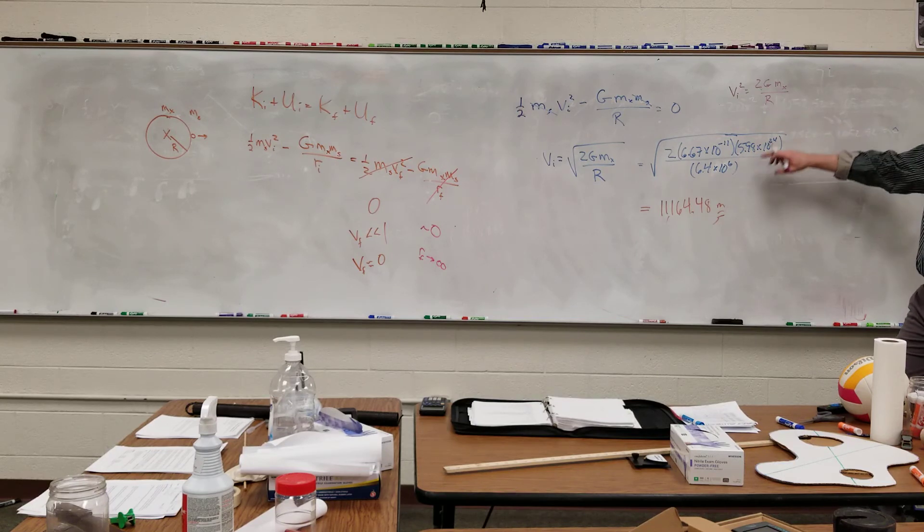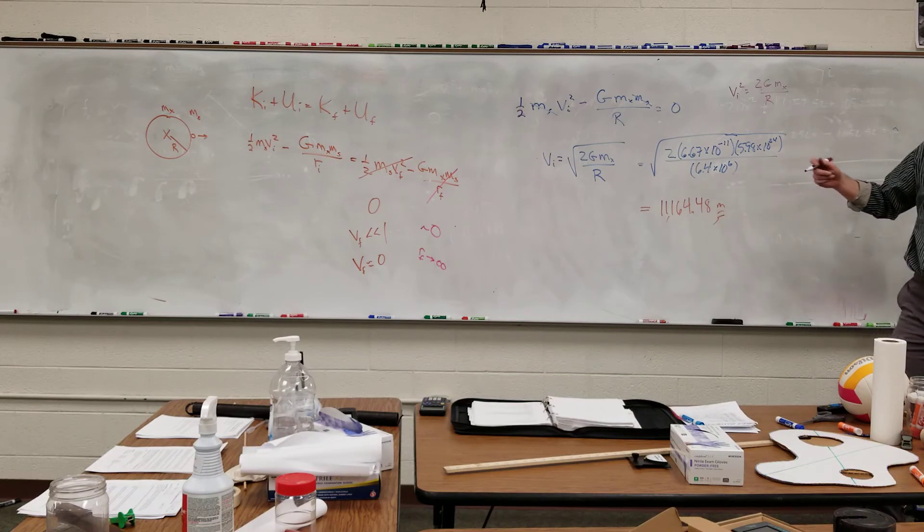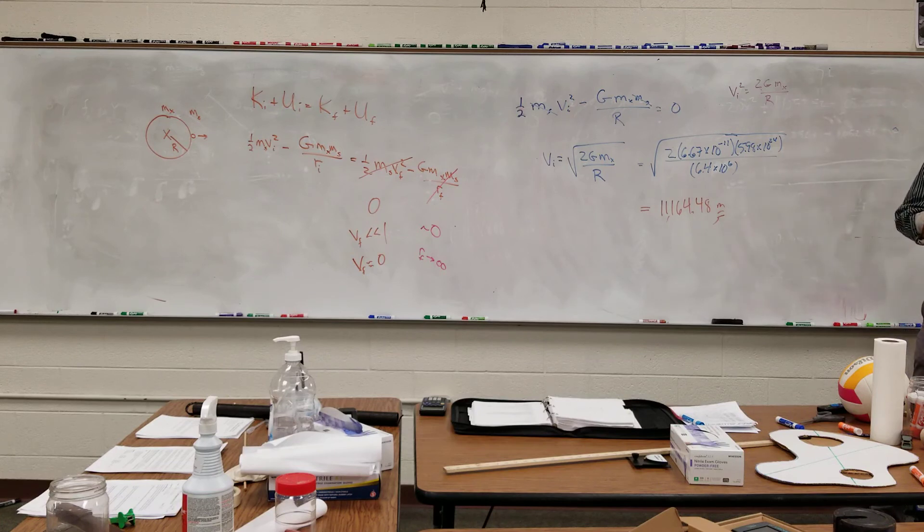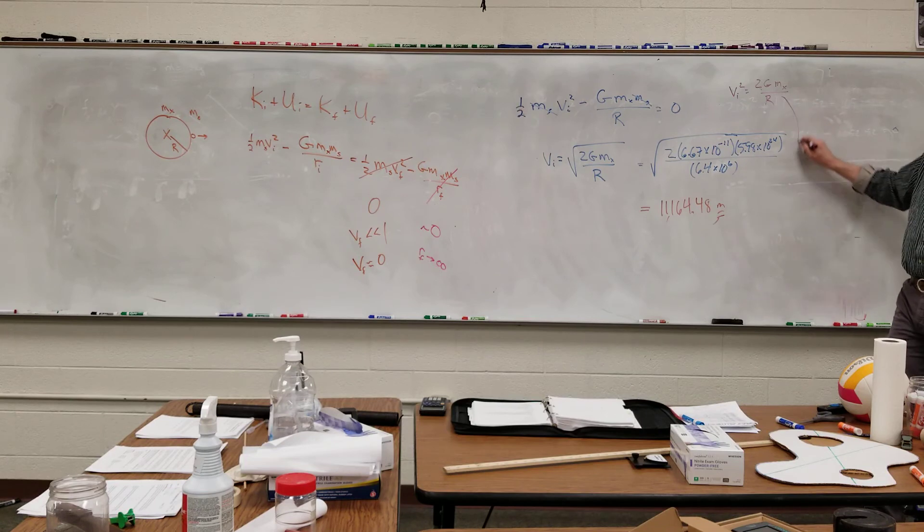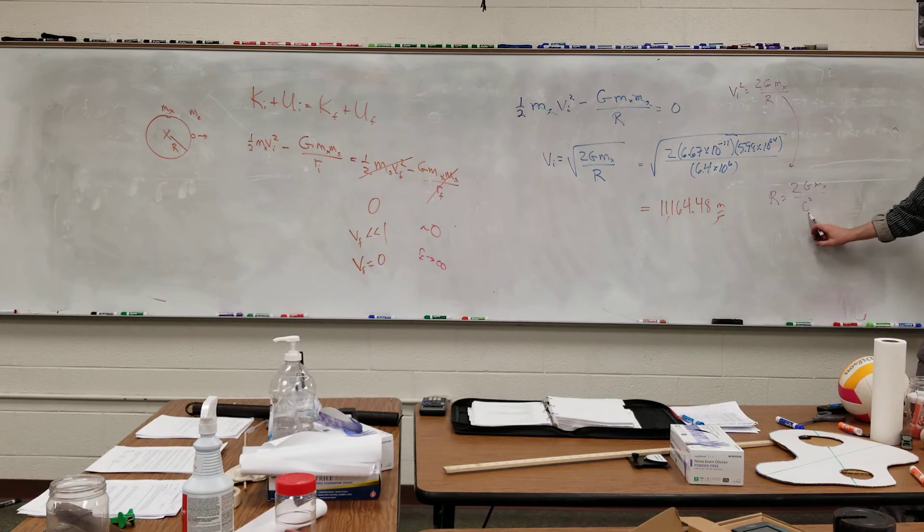If instead of... This is the escape speed, but if there were an actual maximum speed... There it is. If there is a maximum speed, we could then calculate either what does the mass of the planet need to be in order to keep it from escaping, or what is the radius, which is more likely. So if we then just sort of solve for r, r is equal to 2 G mx over c squared, and that v became a c because this is the symbol used for the maximum speed, which is the speed of light.